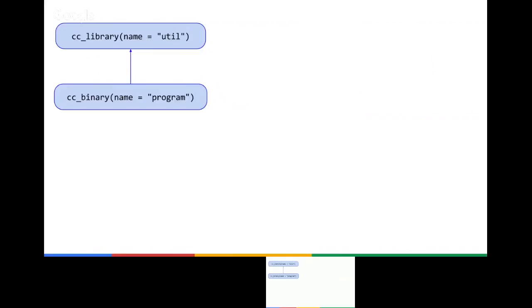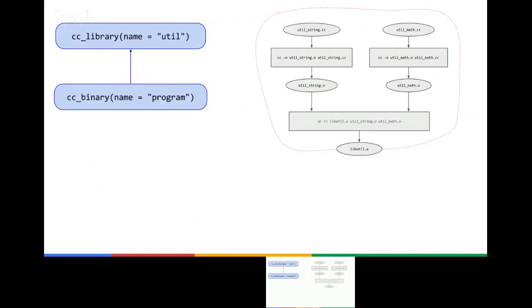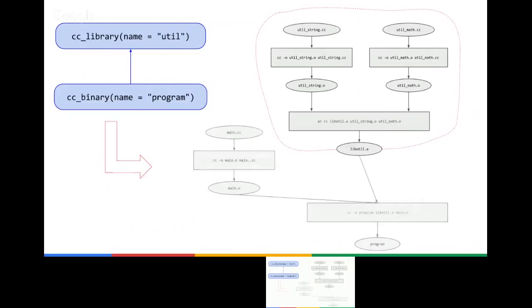Rules work as follows: here we have a simple BUILD file with a library and binary that have some sources and attributes. Bazel will generate an action graph — this is the expansion of the CC library. It will run two commands through the C++ compiler, generate two .o files, and then link the library. The CC binary will also have compilation steps and linking. There is an edge between the two because the CC library sends information to the CC binary, telling it that it will generate a libutil.a. For this communication, we use providers.